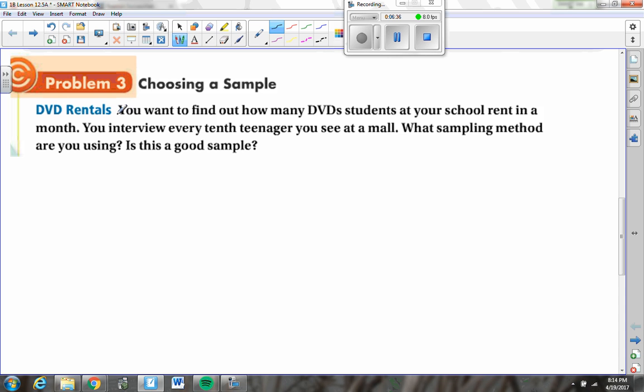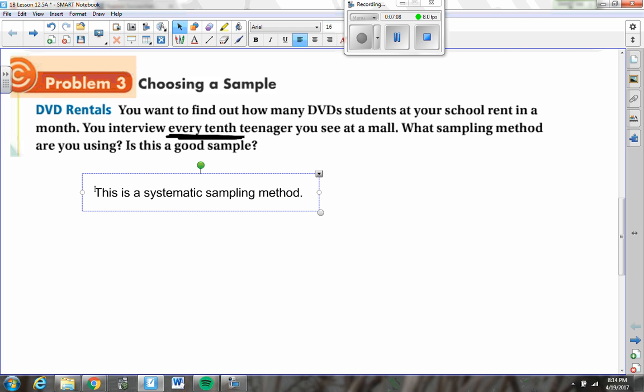So here's a problem about DVD rentals. You want to find out how many DVD students at your school rent in a month. You interview every tenth teenager you see at a mall. What sampling method are you using? Is this a good sampling method? I think the key that we can all pick up on is this phrase right here. Every tenth teenager should tell you what type of sample this is. This is a systematic sampling method because we did every tenth teenager at a mall.